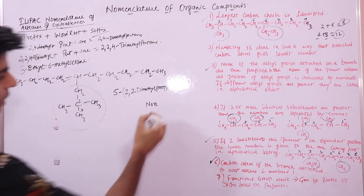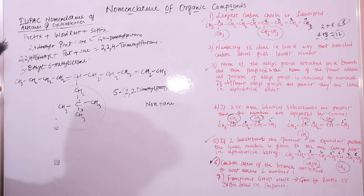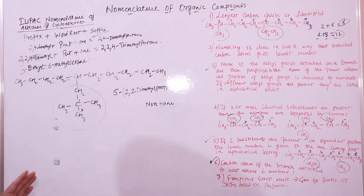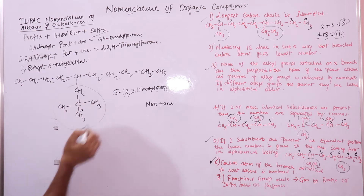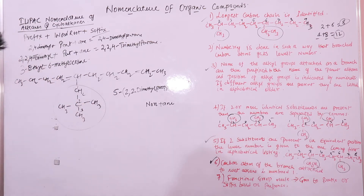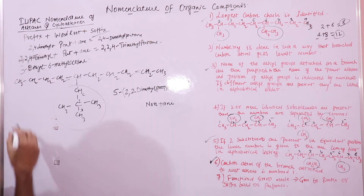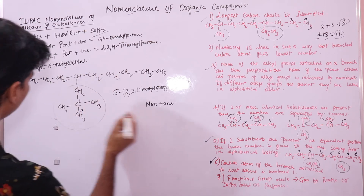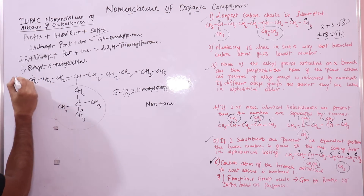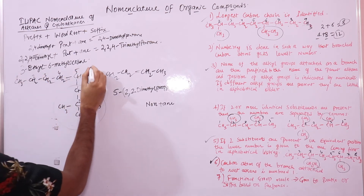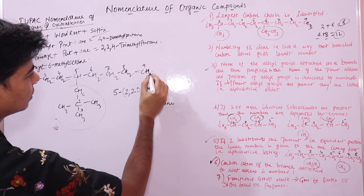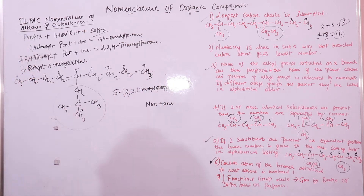The suffix is determined by the type of carbon atoms — since we have carbon-carbon single bonds, we use 'ane'. Now for the prefix, this side chain is present at the fifth carbon atom. We number along the root chain: one, two, three, four, five, six, seven, eight, nine — so this side chain is present at carbon five.